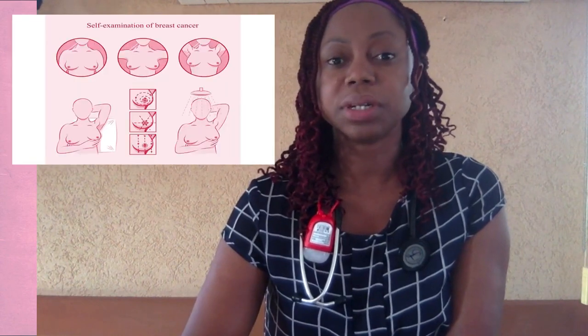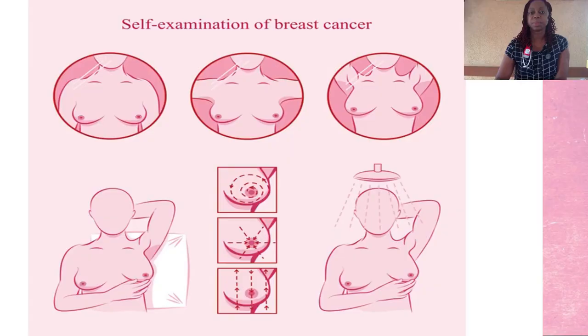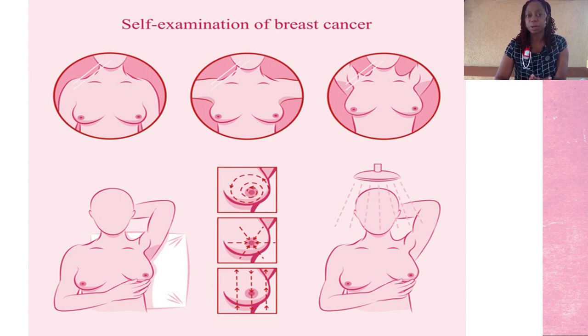The most important of these is the self-examination. This should be performed every month around the same time, because during a person's menstrual cycle, the breast tissue can change — the ducts can become inflamed and swollen and produce different discharges. So examine your breasts around the same time every month. Please be aware that men need to examine their breasts just as often as women, because one percent of all breast cancer cases are actually found in men.